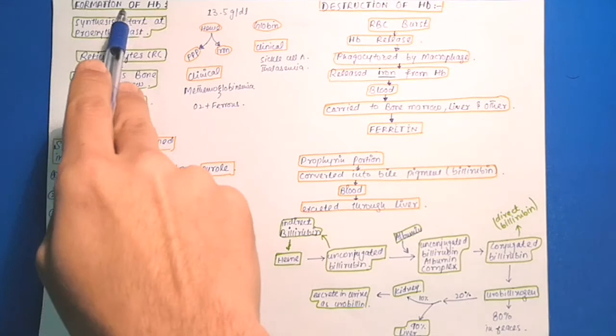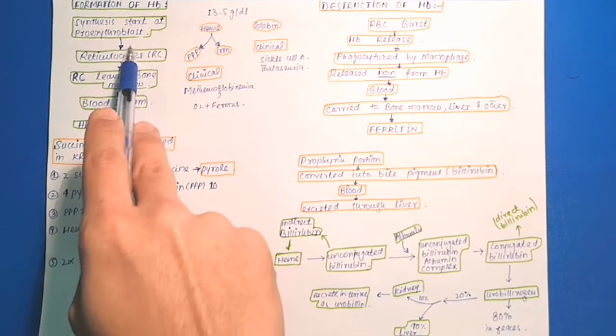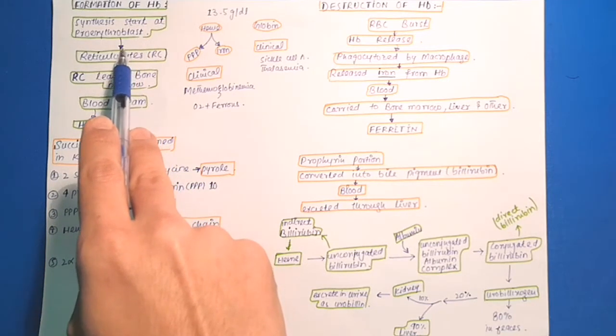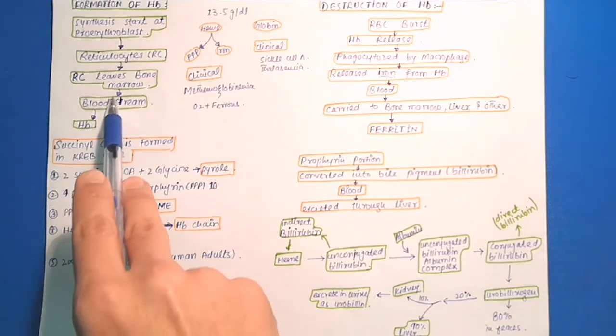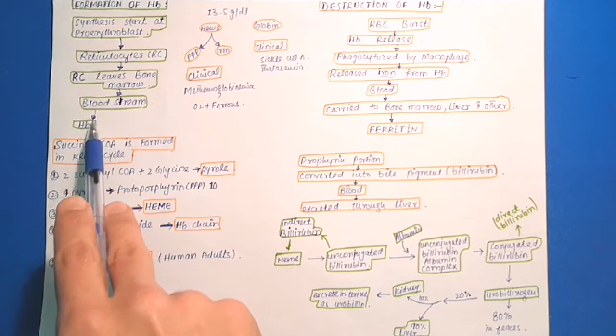Formation of hemoglobin. The synthesis of hemoglobin begins in proerythroblast and continues in the reticulocytes. When the reticulocytes leave the bone marrow and enter into the bloodstream, they form a small amount of hemoglobin for another day or until they become mature red blood cells.